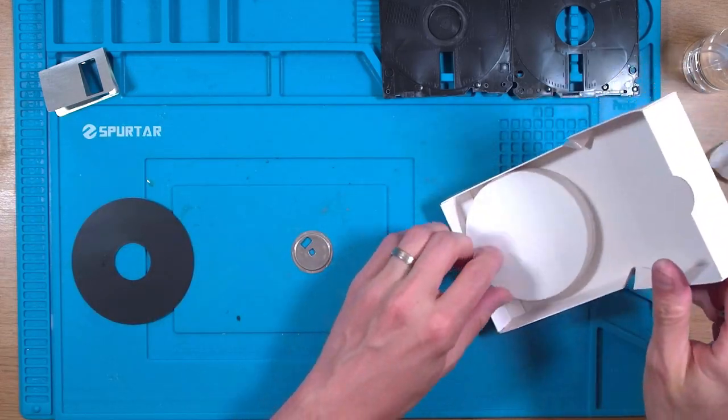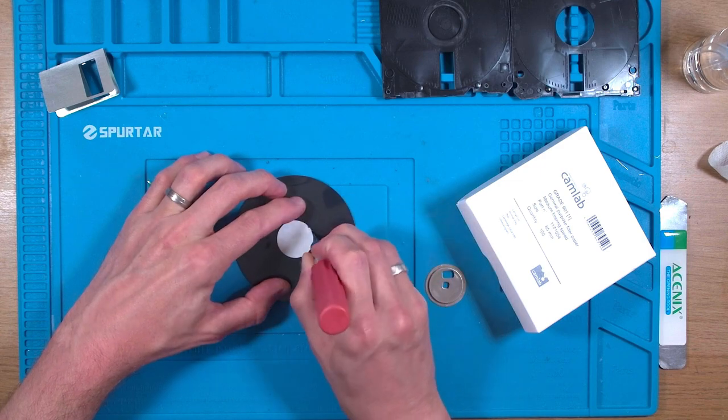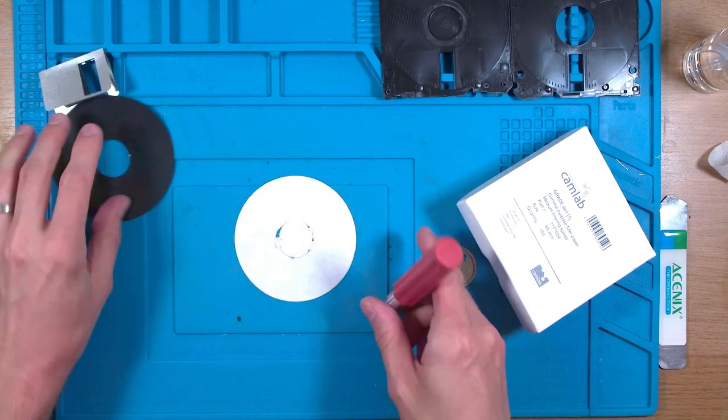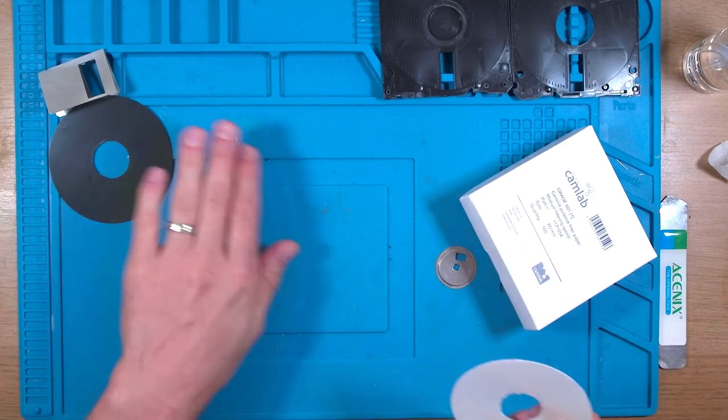I overlay the disk onto one of these filters and use it as a template to cut a hole in the centre. You can if needed use two filter papers but I've had great success by just using one. Once done we can check if it fits and then trim it further as required.